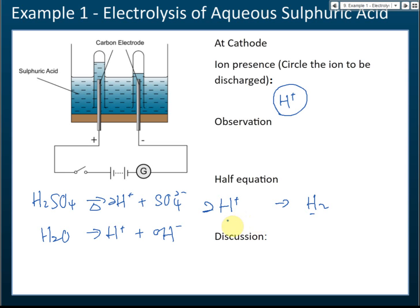Now we balance the charge. On the left, we have two hydrogen ions, so the charge is +2. On the right, the hydrogen molecule is neutral, so the charge is 0. To balance, we add two electrons to the left side: +2 plus −2 gives zero. Both sides are now balanced.